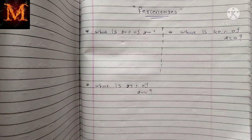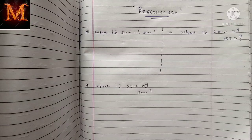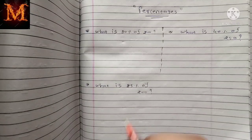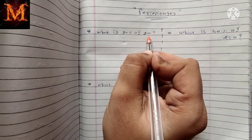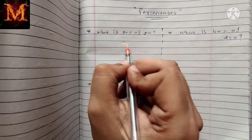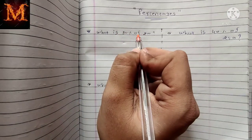Hello everyone, welcome to my YouTube channel. Today in this video we are going to talk about percentage. We are going to learn how we can calculate the percentage of any number by the cross multiplication method, which is very easy. So let's start. The first question is: what is 30% of 200?